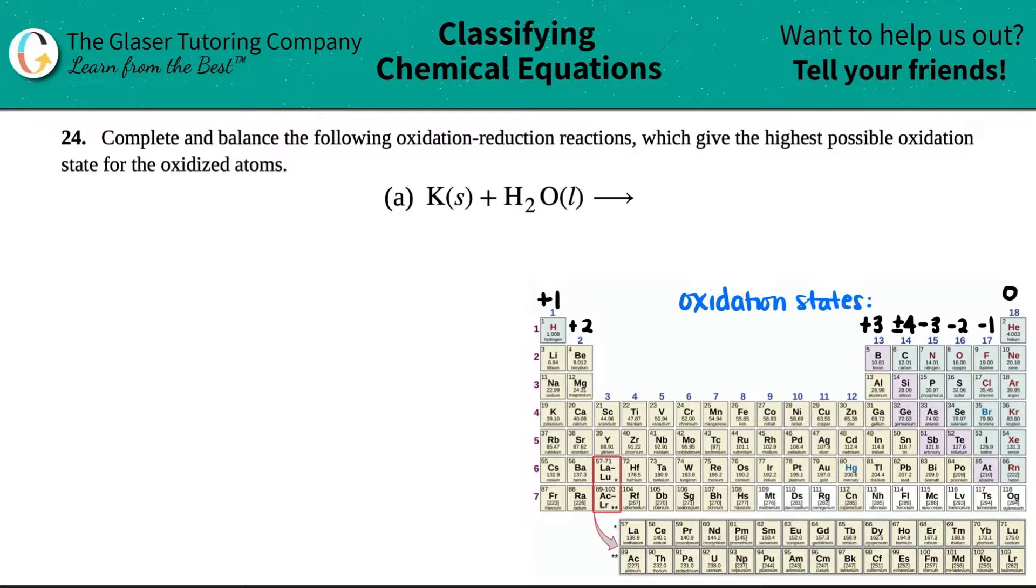Number 24, complete and balance the following oxidation reduction reactions, which give the highest possible oxidation state for the oxidized atoms. And then we have letter A.